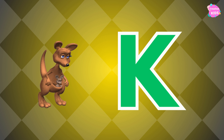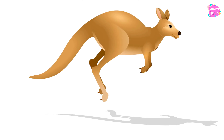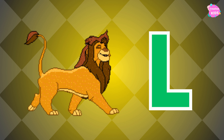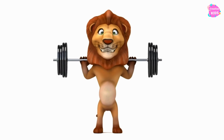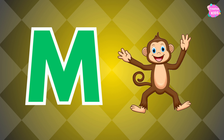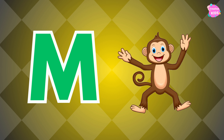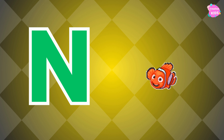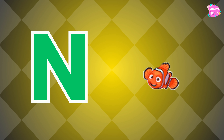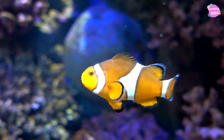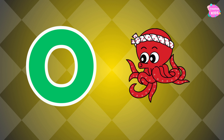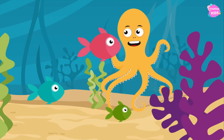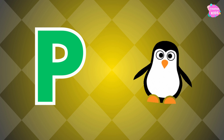K is for kangaroo, K, kangaroo, K, kangaroo. K is for kangaroo. L is for lion, la, lion, la, lion. L is for lion. M is for monkey, ma, monkey, ma, monkey. M is for monkey. N is for nemo, na, nemo, na, nemo. N is for nemo. O is for octopus, O, octopus, O, octopus. O is for octopus.